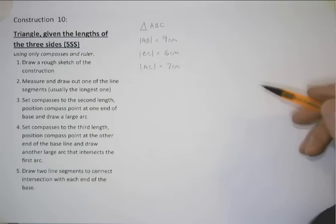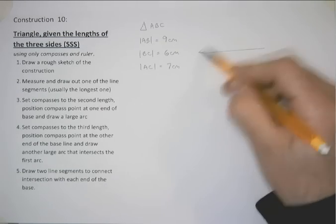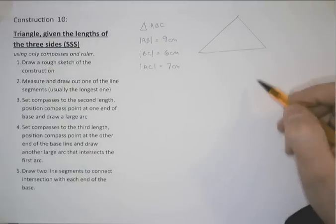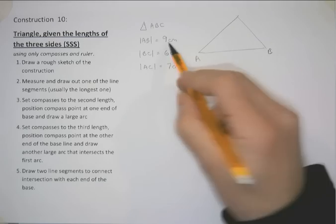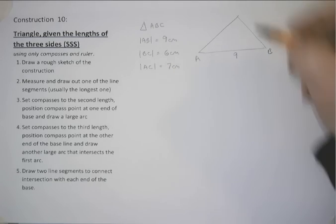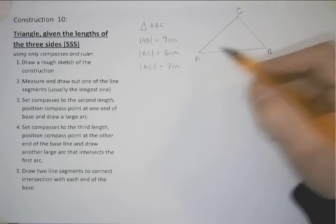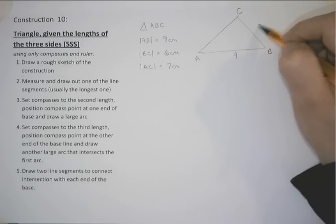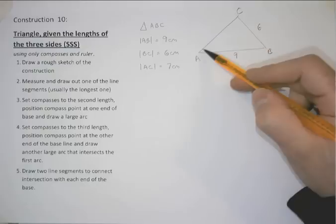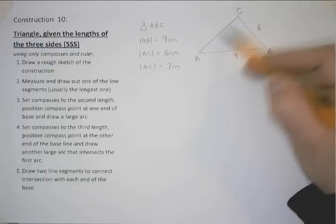Let's visualize what that looks like. Let's just draw ourselves a triangle. Let's make this our base, which is going to be AB and it's going to be 9 centimeters. This third point is going to be C. So we've got BC is 6 centimeters and AC is 7.